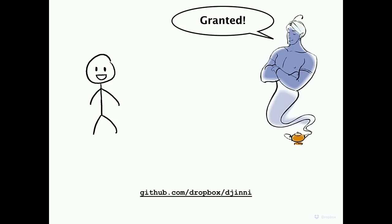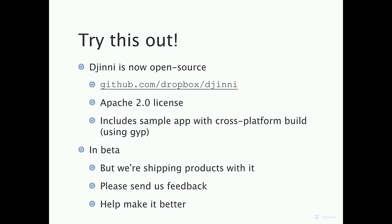Djinni is now open source — available on GitHub under Apache 2.0 license. It contains a sample app that builds cross-platform on Android and iOS. We use Google's cross-platform build tool from Chromium called GYP, so you'll see an example of that as well. Djinni is in beta — not because we think it's broken (we're shipping products on it) — but we've only tested it on our use cases. Let us know if it works for yours, and send pull requests if you can help.